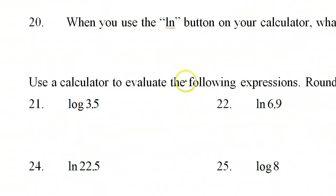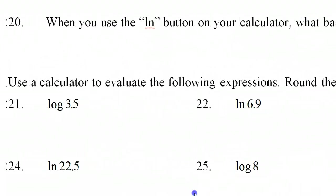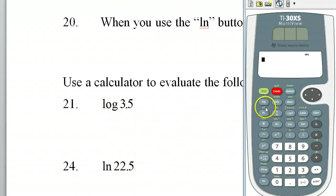Use the calculator to evaluate the following expressions. Round result to four decimal places. Log 3.5. Let me turn on my calculator. Log 3.5. So here's the log button right here. So log 3.5. That is, let's see, it's at four decimal places. So .5441.